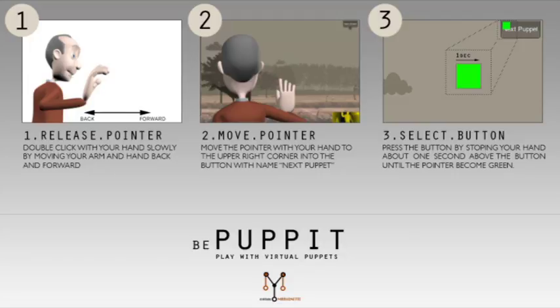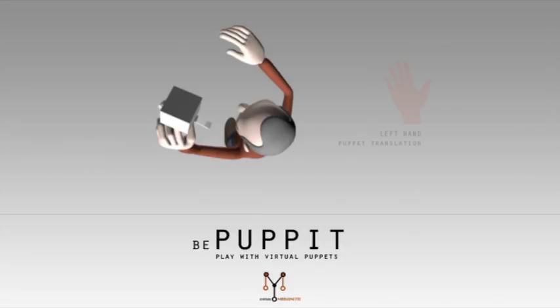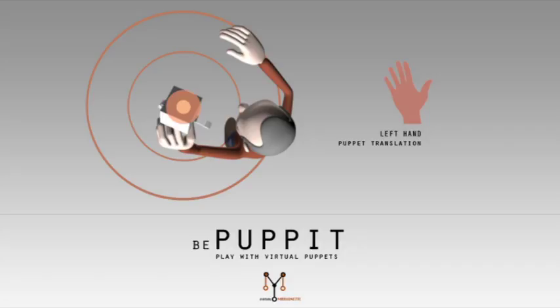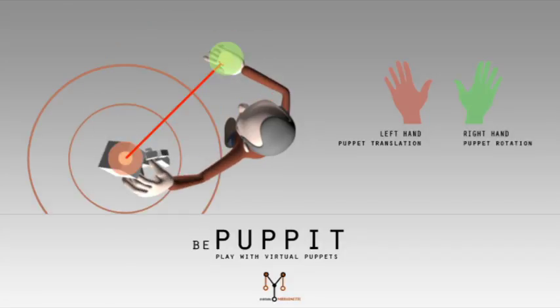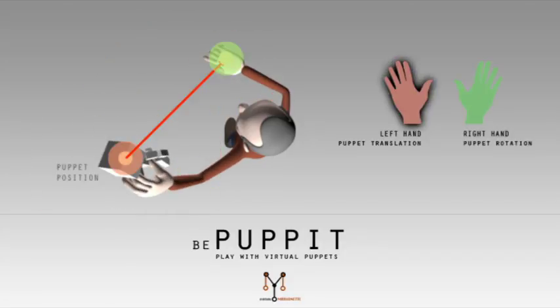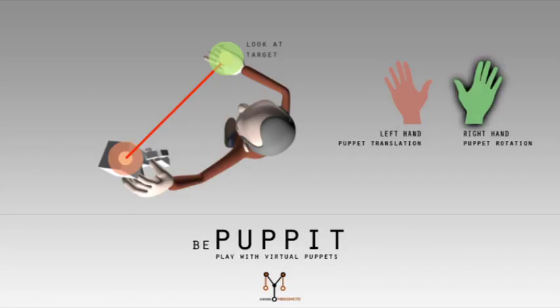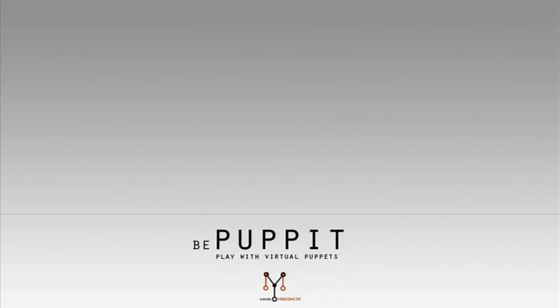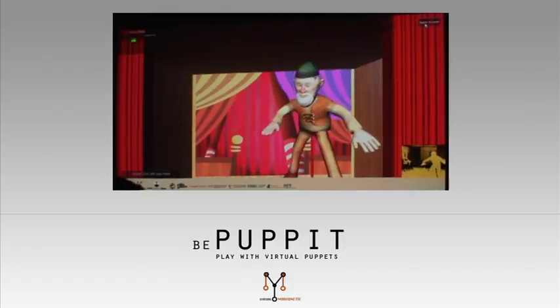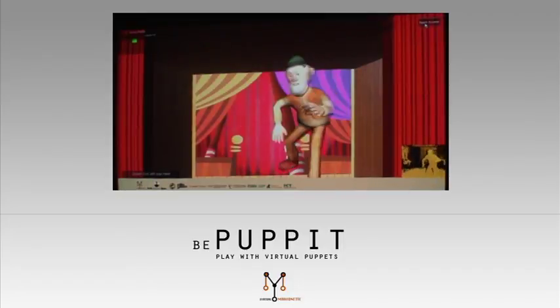To play with the rag puppet, with the left hand grab the puppet, moving its position. With the right hand, move a virtual target where the puppet looks at, making the puppet rotate.